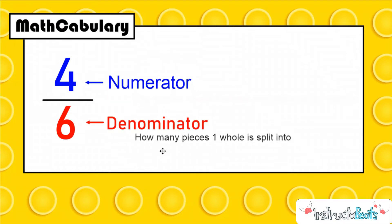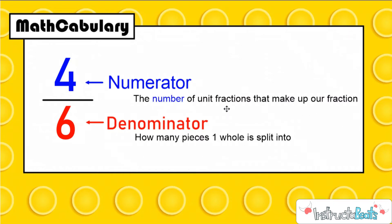The denominator tells us how many pieces one whole is split into — it could be a whole pizza, a whole Hershey bar, or even a number line — it tells us how many pieces make up that one whole. Our numerator tells us the number of unit fractions that make up our fraction. A unit fraction is one part of the whole, and we use those to build the fractions we're talking about. Check out our previous lesson on unit fractions if you want to know more.